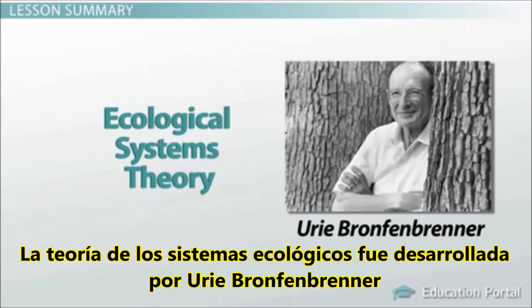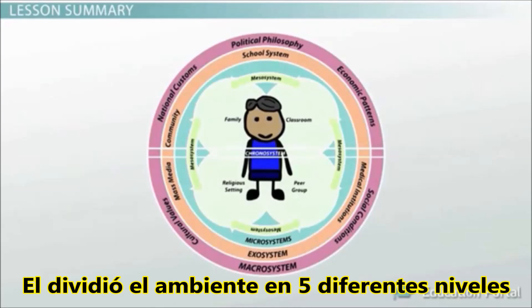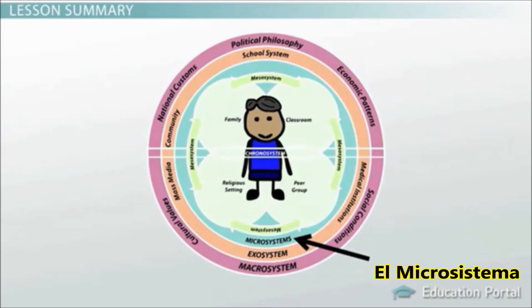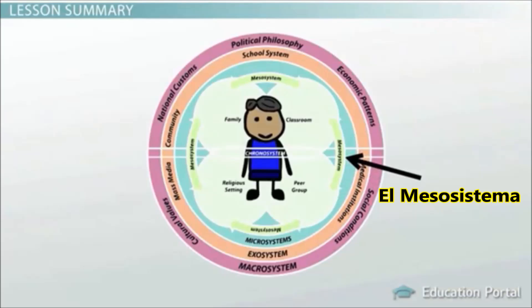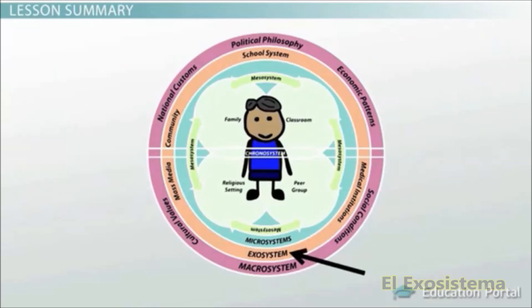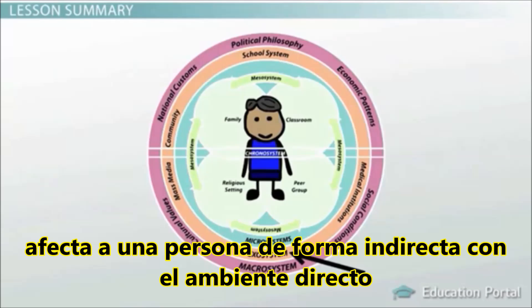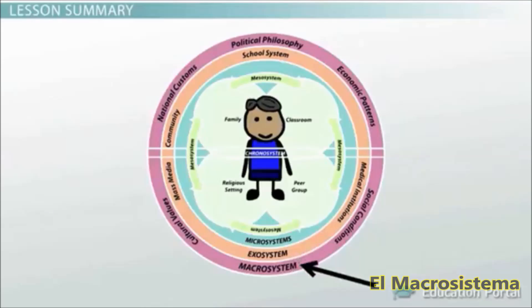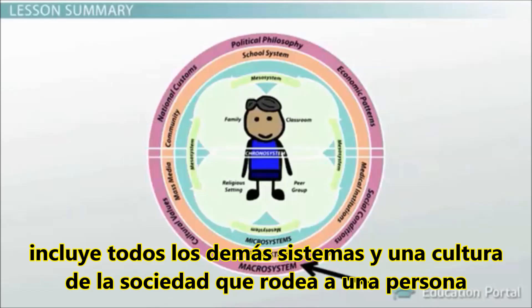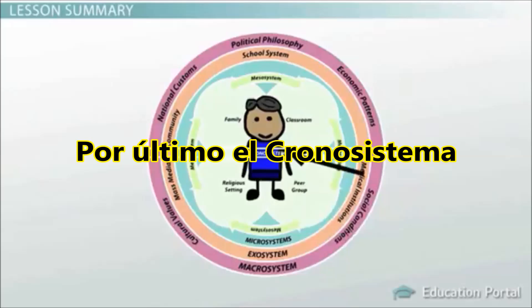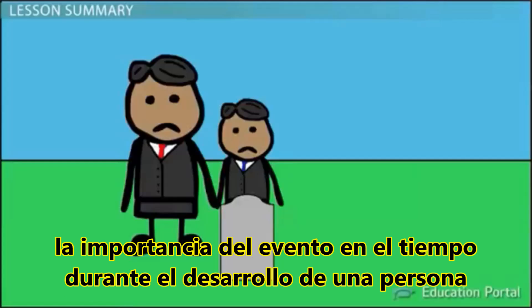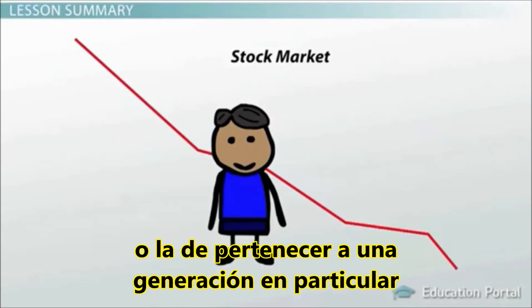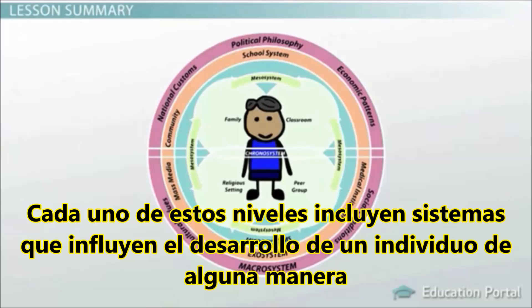Ecological Systems Theory was developed by Uri Bronfenbrenner, who divided the environment into five different levels. The Microsystem is the most influential and has the closest relationship to the person. The Mesosystem consists of interactions between a person's Microsystems. The Exosystem affects a person indirectly without their direct involvement. The Macrosystem includes all other systems and the societal culture surrounding a person. Finally, the Chronosystem refers to the dimension of time, encompassing both the timing of events during a person's development and events unique to a particular generation. Each of these levels includes systems that influence the development of an individual.